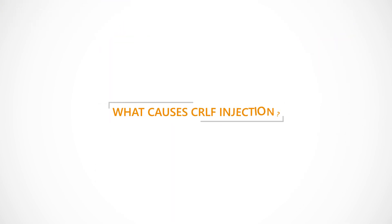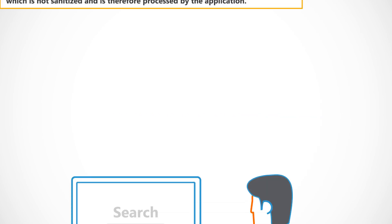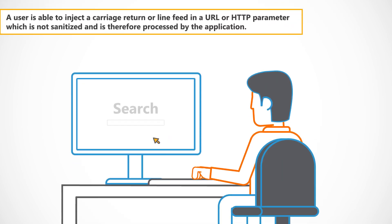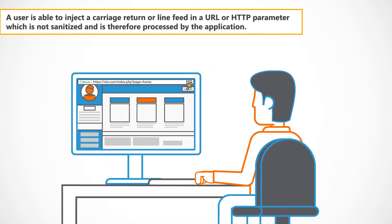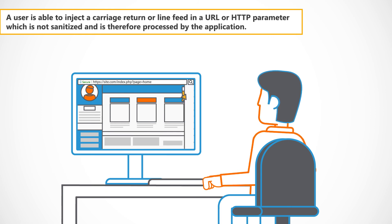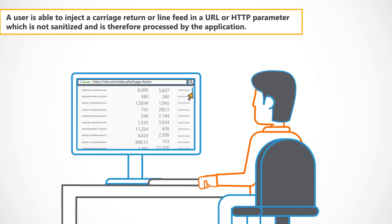What causes CRLF injection? A user is able to inject a carriage return or line feed in a URL or HTTP parameter which is not sanitised and is therefore processed by the application.